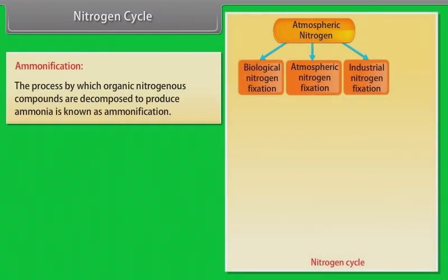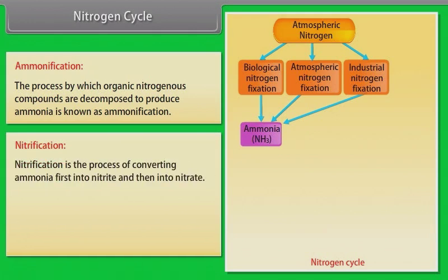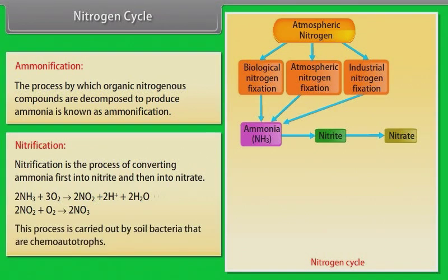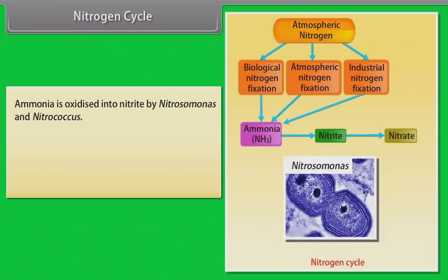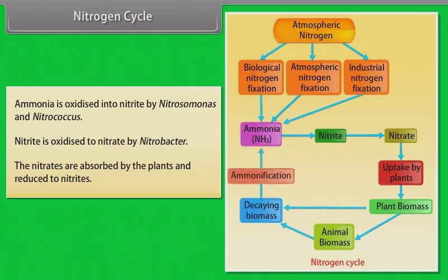Ammonification: the process by which organic nitrogenous compounds are decomposed to produce ammonia is known as ammonification. Nitrification: nitrification is the process of converting ammonia first into nitrite and then into nitrate. The reactions are: 2NH₃ + 3O₂ → 2NO₂⁻ + 2H⁺ + 2H₂O, and 2NO₂⁻ + O₂ → 2NO₃⁻. This process is carried out by soil bacteria that are chemo-autotrophs. Ammonia is oxidized into nitrite by Nitrosomonas and Nitrococcus. Nitrite is oxidized to nitrate by Nitrobacter. The nitrates are absorbed by the plants and reduced to nitrites.